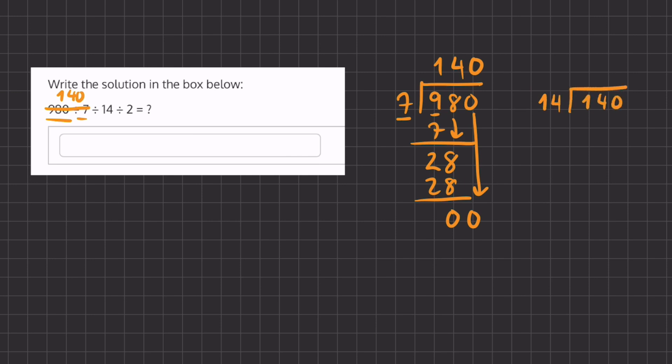So 14 goes into 1, 0 times. So we will have a remainder here of 1. We'll carry down this 4, and we'll ask ourselves how many times does 14 go into 14, and that is exactly once.